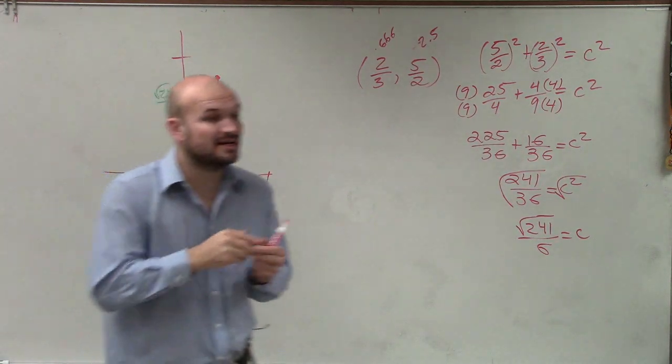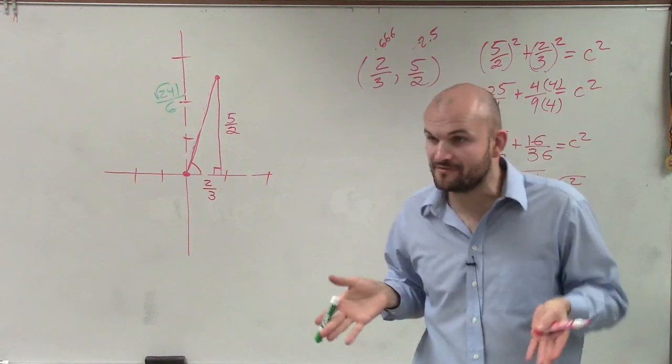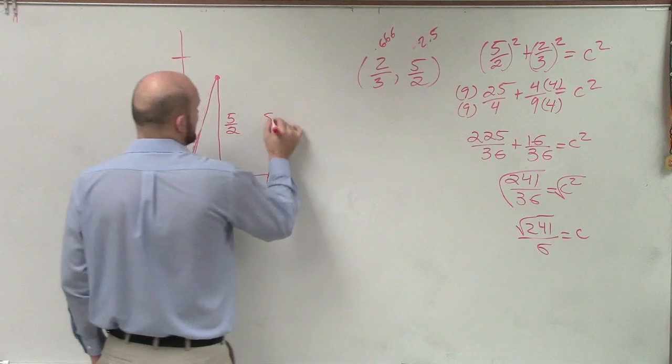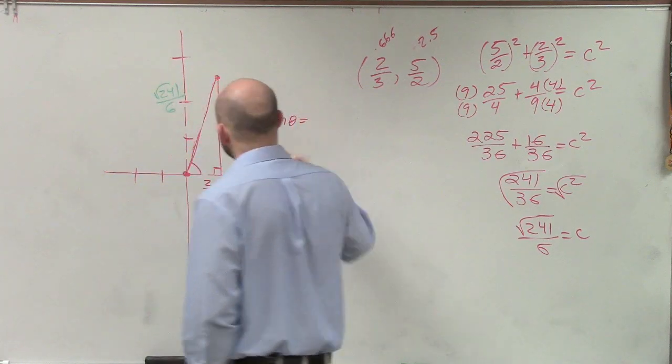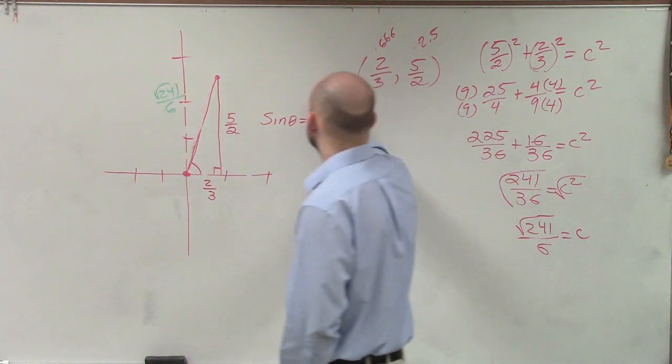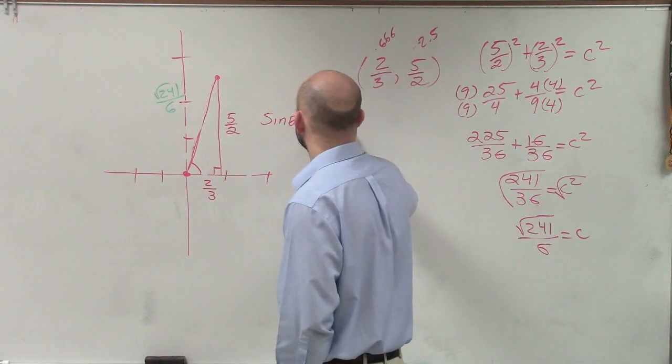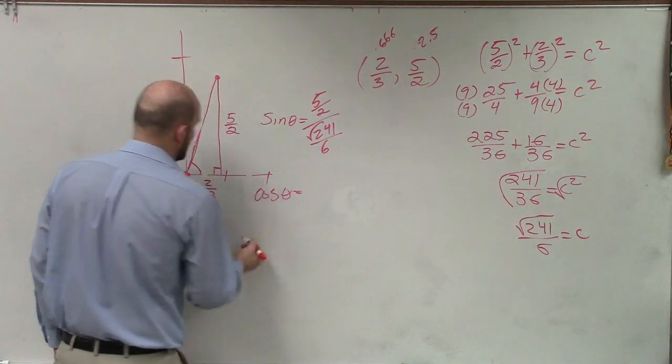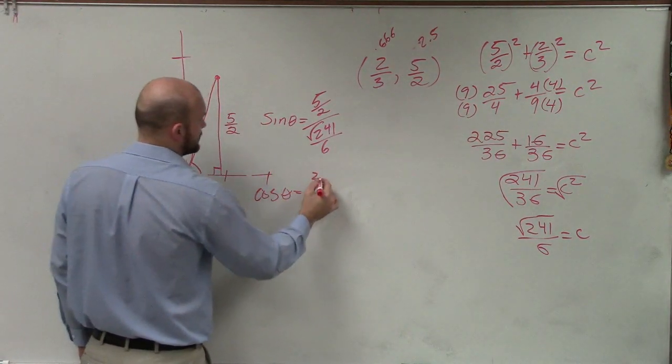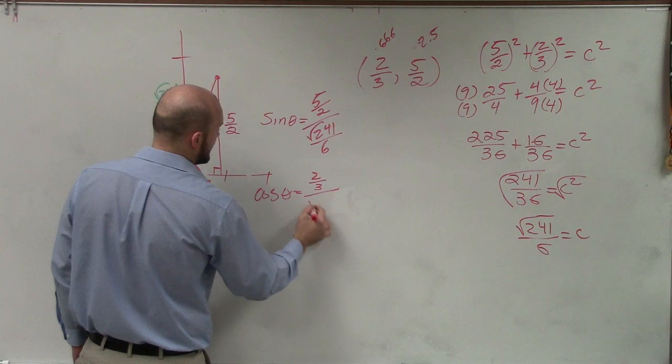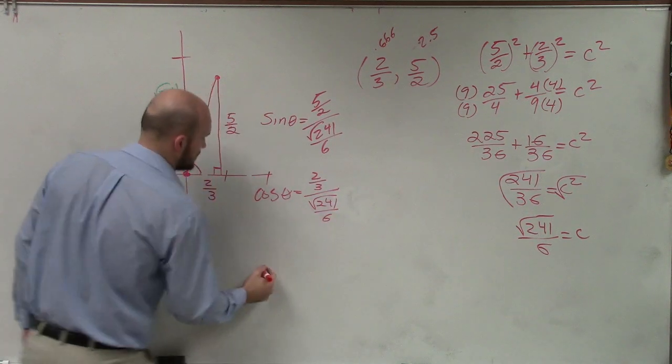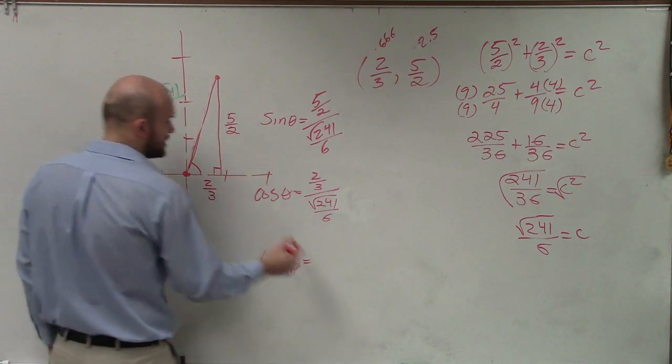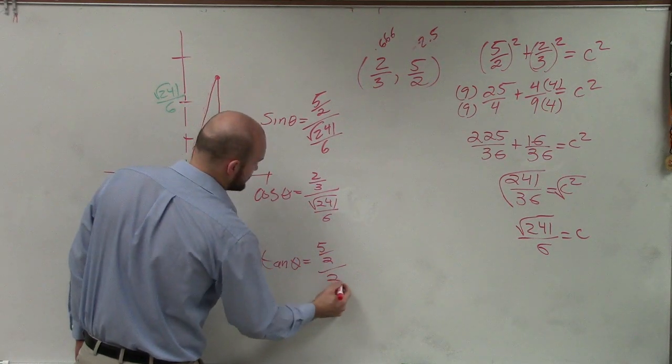Now that I have the adjacent, the opposite, and the hypotenuse, can I find all the trigonometric functions? Yes, of course you can. So you could say sine of theta. Remember, on a triangle, it's opposite over hypotenuse. So it's 5 halves over the square root of 241 divided by 6. Cosine of theta is adjacent over hypotenuse. 2 thirds divided by the square root of 241 over 6. The tangent of theta equals opposite over adjacent. 5 halves divided by 2 thirds.